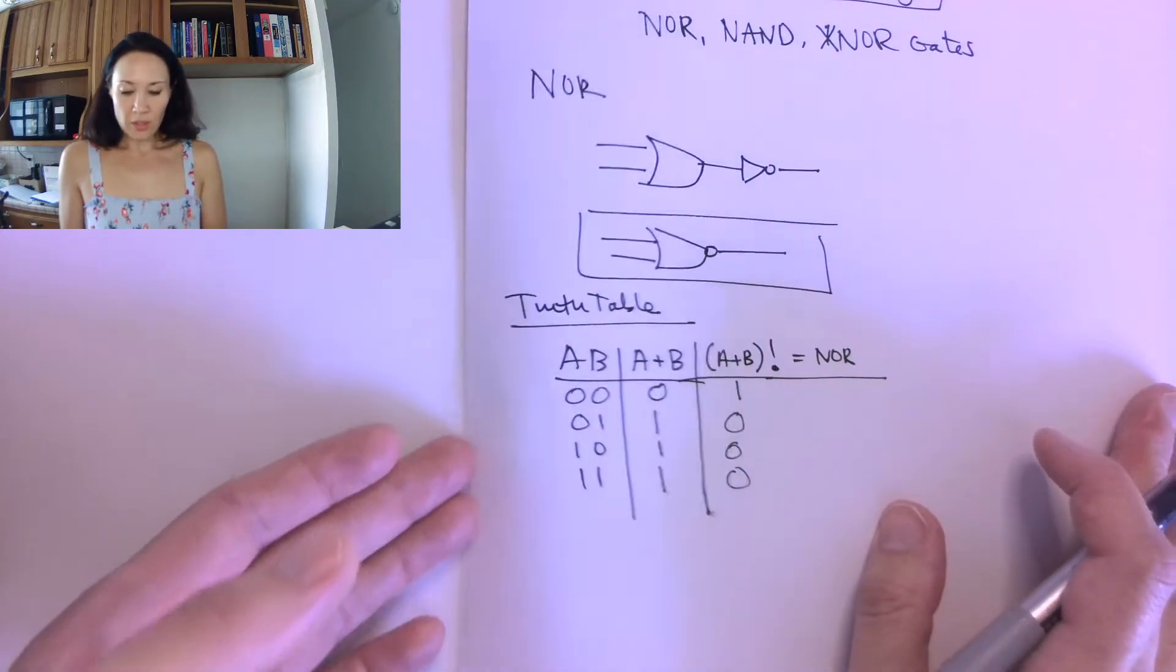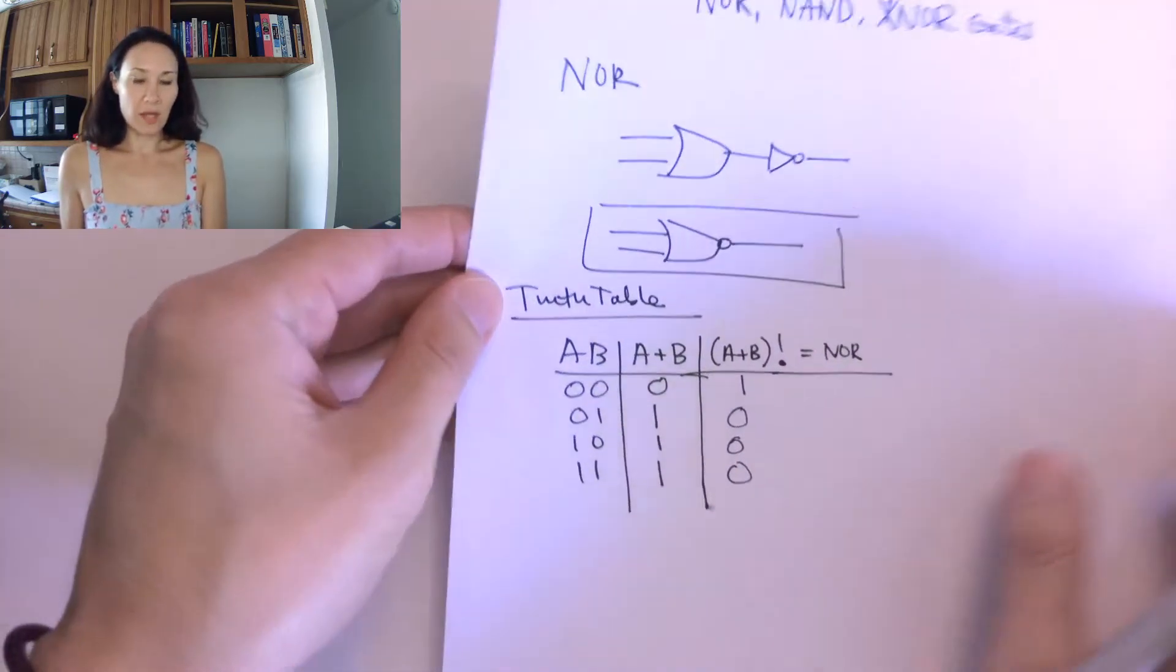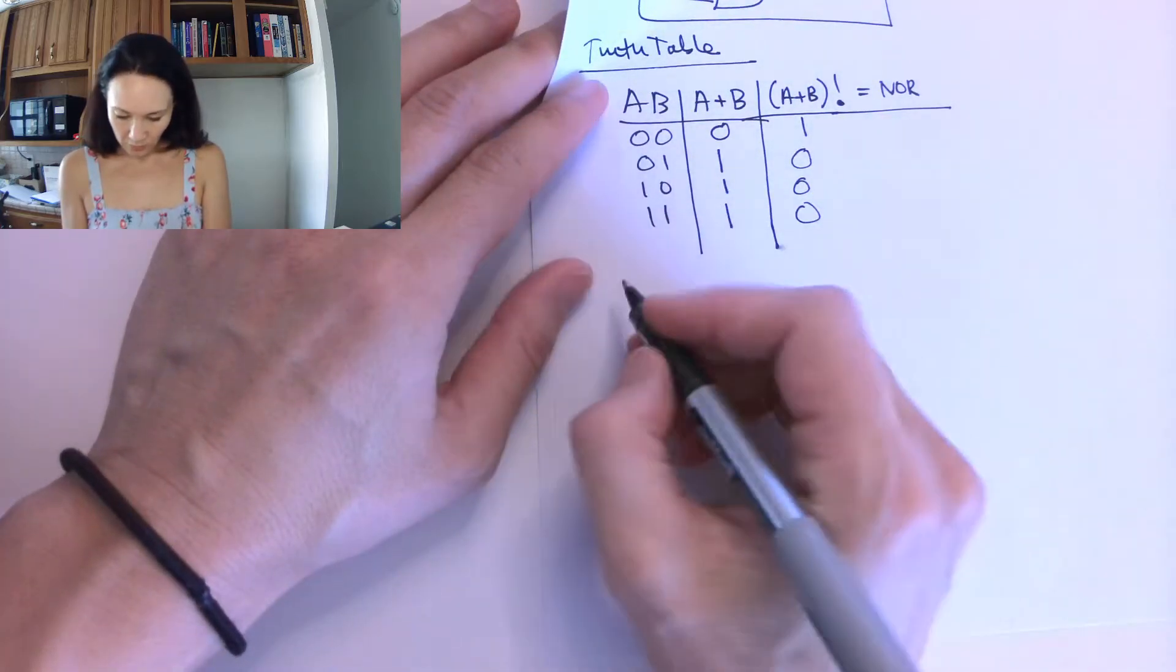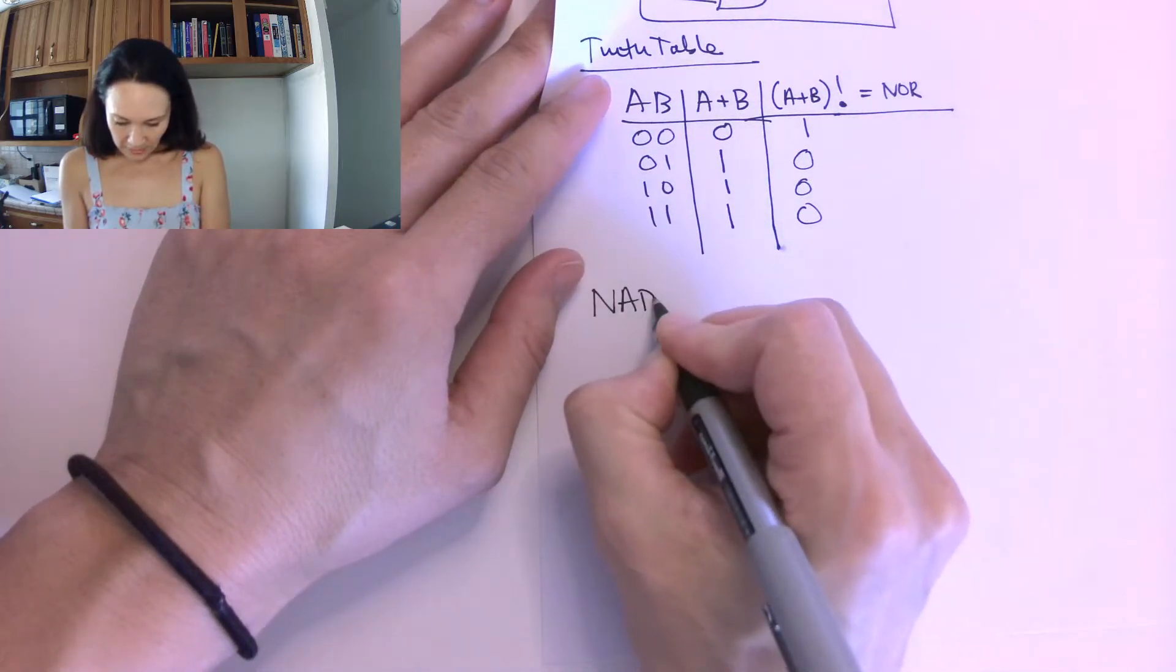Not only can we put an inverter on the end of an OR gate, we can also put one on the end of an AND gate. That gives us the NAND.